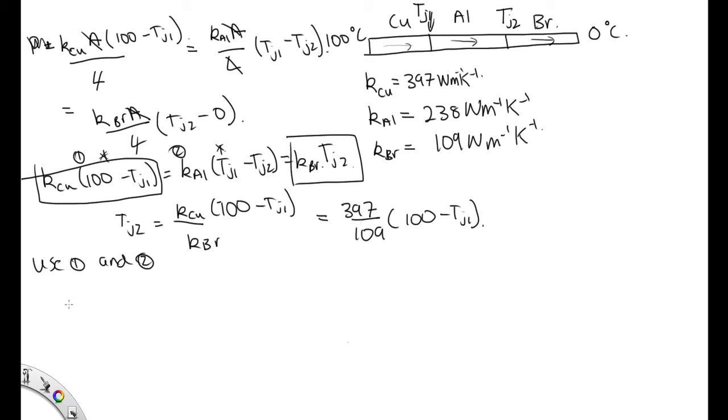So we've got copper, that's 397, 100 minus TJ1 is equal to aluminum, which is 238, TJ1 minus TJ2, which is 397 over 109 times 100 minus TJ1. Now we've only got one unknown.